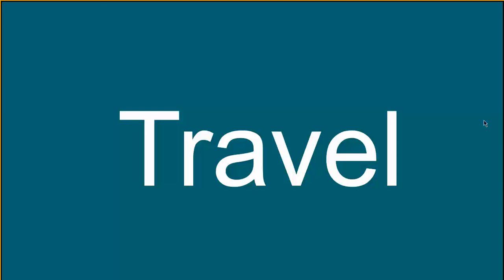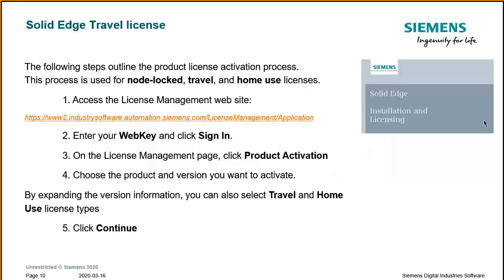Another license type we'll cover today is the travel license, which is useful when you're on the road and need to work off your company's premises. You can obtain it using the link displayed on screen. You access the license management website and need two pieces of information: your WebKey credentials and your Composite CID number. On the license management page, click Product Activation and choose the product and version you want to activate, since your company might use different add-ons and products. By expanding the version information, select the travel license type, then click Continue.